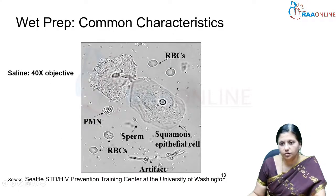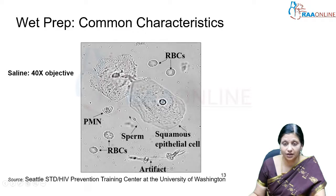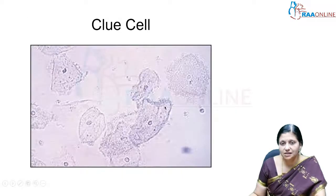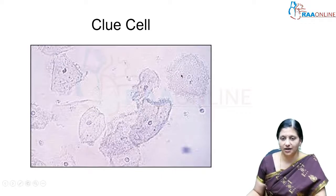When sodium chloride is used and the slide is viewed at 40x magnification, we can see desquamated vaginal cells in the vaginal discharge. We may also see blood cells, pus cells, or polymorphonuclear cells. If the patient had intercourse the day before, sperms may be visible as well as squamous epithelial cells — these are the normal vaginal smear findings. If we see a vaginal cell studded with small coma-shaped or round bacilli, this is called a clue cell.